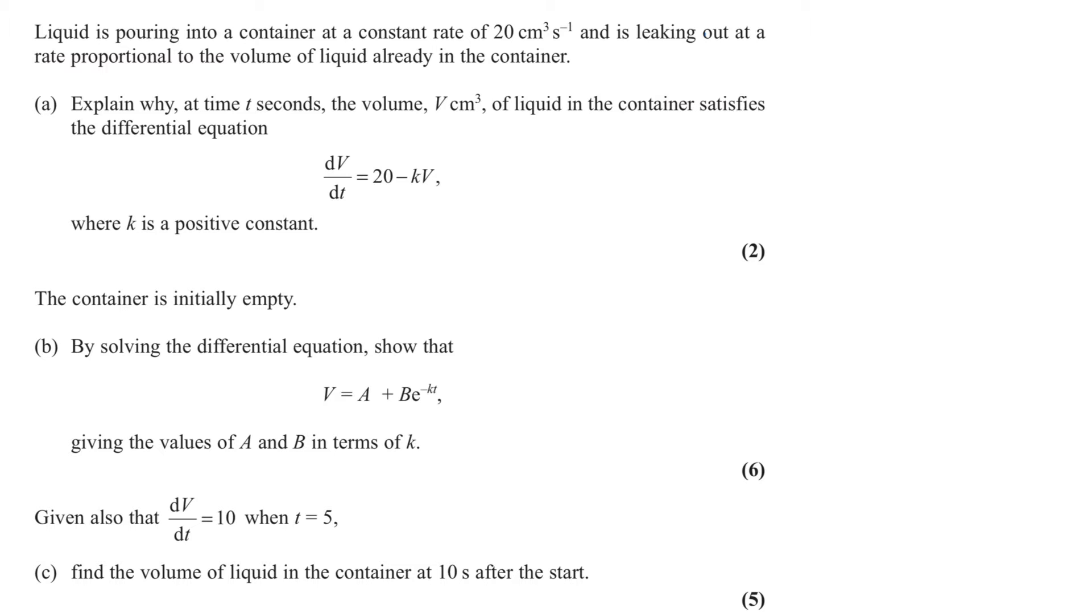Here we have a past paper question. We can see that liquid is pouring in at a constant rate of 20 centimeters cubed per second. And then it's leaking out at a rate that is proportional to the volume already in the container. We've got to first explain this scenario. dV/dt is the rate of change of volume with respect to time, the rate of change of volume.